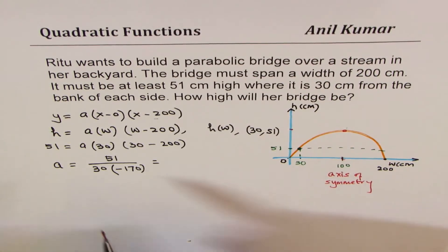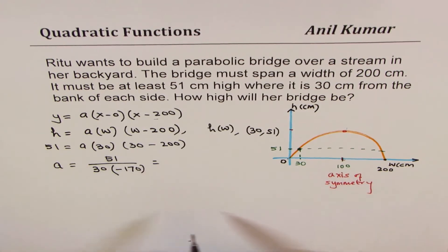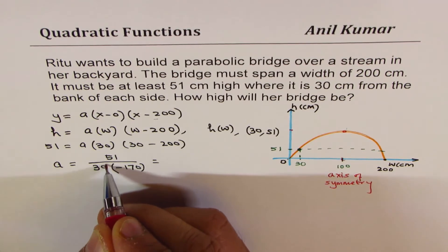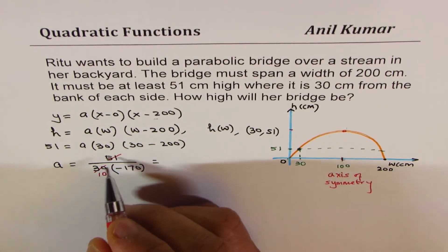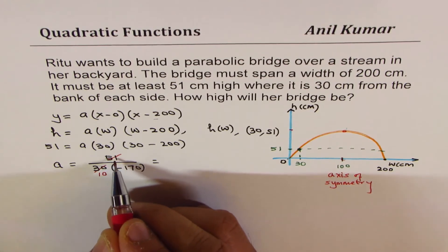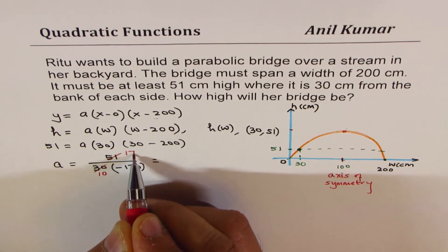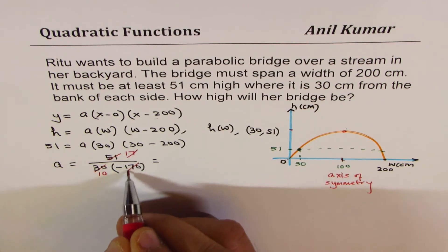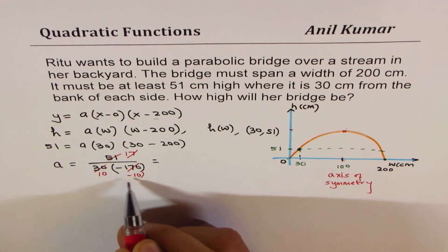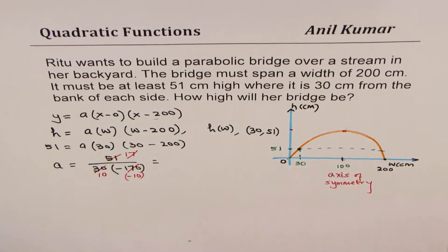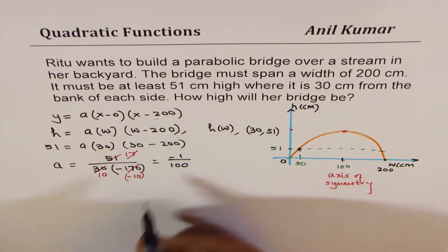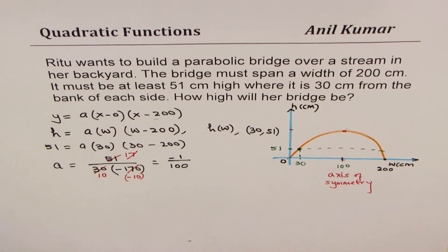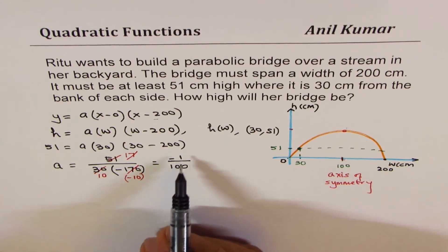Now you could simplify this. You can always use your calculator to do the math, or let's do it. 30 is 10 times 3, and if you do 3 times 51, 3 times 1 is 3, 21 is 7, so you'll see 7 and 17 also goes, minus 10 times. So what do you get? Here is a equals to minus 1 over 100. The beauty of this is you get minus 1 over 100.